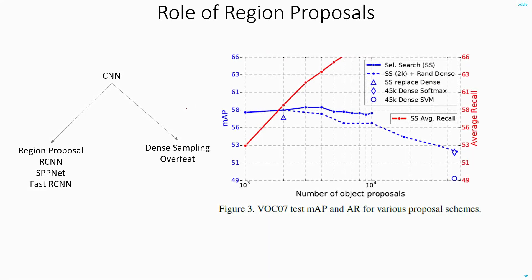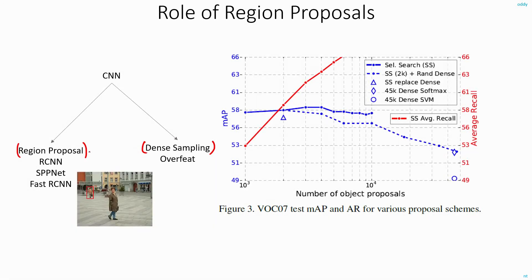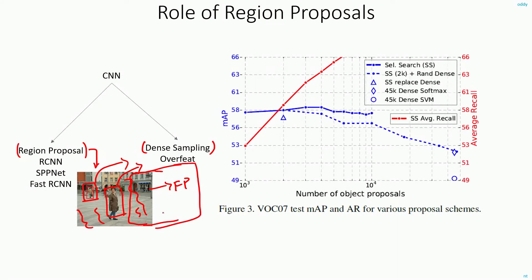There has been a discussion about whether the dense sampling or sliding window detector is better, or whether using region proposal networks is better. One theory is that region proposal networks are better because they eliminate background regions from computation — they extract only the interesting parts from the image and pass only those regions for further processing. This eliminates false positives: if Fast RCNN had analyzed even background regions, it might have generated false positives. By eliminating those regions you get higher levels of accuracy.